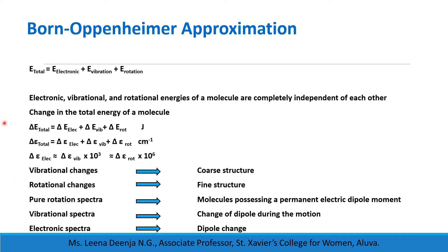Pure rotational spectra are shown only by molecules possessing a permanent electric dipole moment, and vibrational spectra require a change in dipole during the motion. Electronic spectra are given by all molecules, since changes in electron distribution in a molecule are always accompanied by a dipole change.